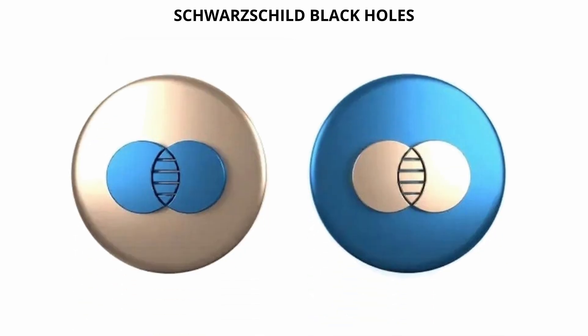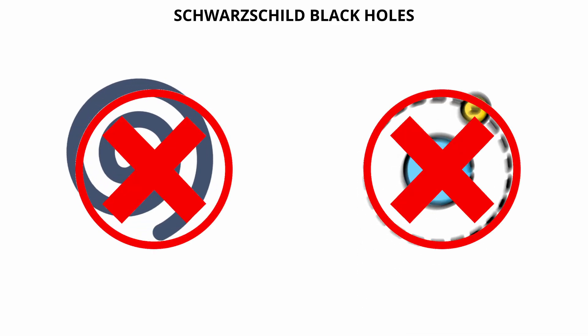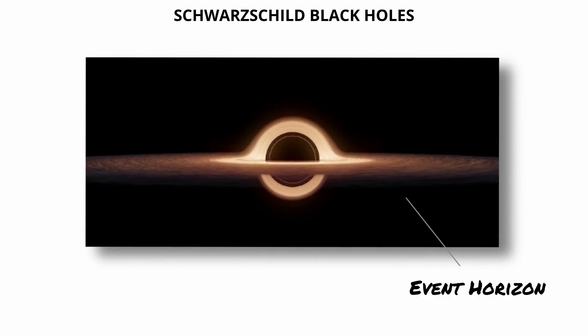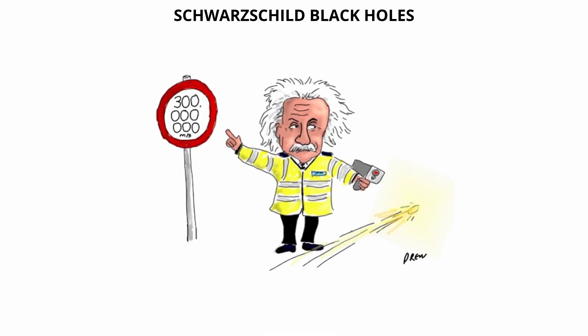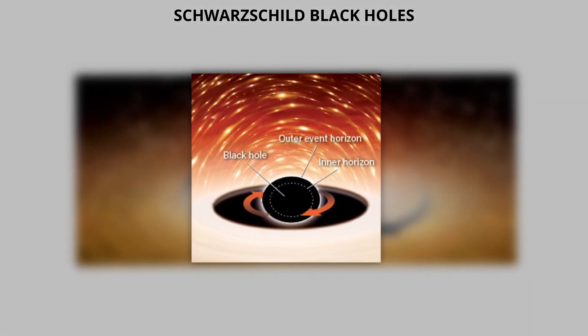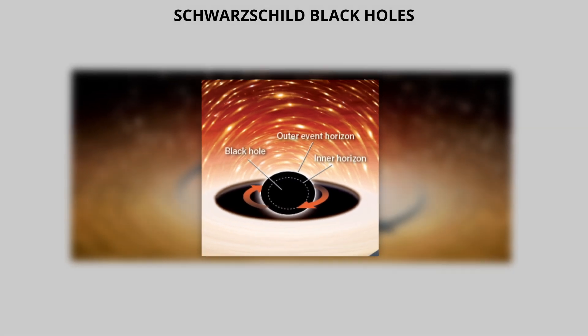A Schwarzschild black hole is spherically symmetric. It has no spin and no electric charge, making its geometry relatively straightforward. The only surface it features is the event horizon, a spherical boundary where the escape velocity equals the speed of light. There is no ergosphere or additional outer structure as is seen in rotating or charged black holes.